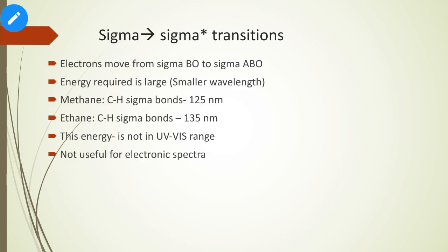First, let us look at the sigma to sigma* transitions. Sigma to sigma* transitions arise when electrons move from the sigma bonding orbital to the sigma antibonding molecular orbital. As we have seen in the LCAO combination method, whenever there is a sigma bond there are two molecular orbitals: one is sigma and another one is sigma*.